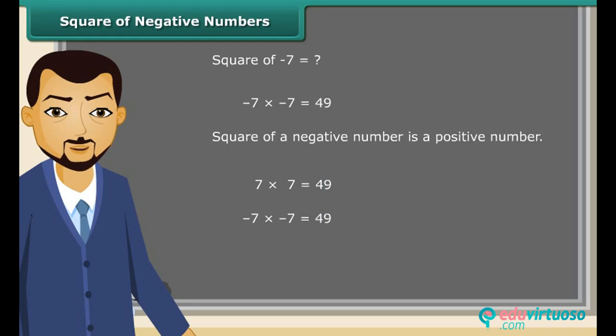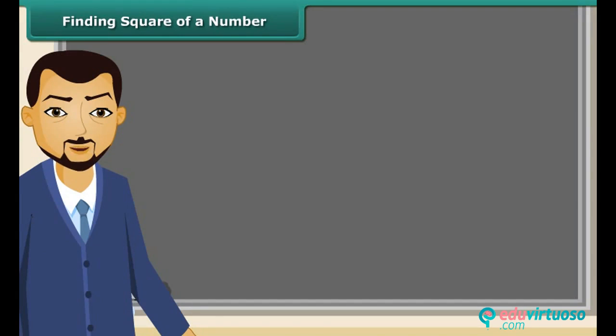Let us know about square roots now. We can easily find the squares of small numbers like 7, 4, 5, etc. But is it easy to find the square of 27 so quickly? Let us find how we may find the square of 27.